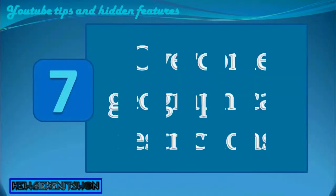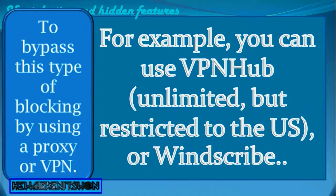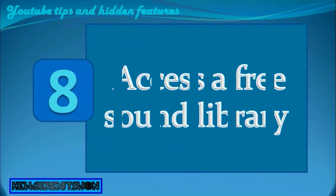7. Overcome Geographical Restrictions. Some videos may be geographically blocked. It is possible to bypass this type of blocking by using a proxy or VPN from your computer, but also from your smartphone. For example, you can use VPN Hub Unlimited, but restricted to the US, or Windscribe, limited to 10GB of data per month, with several countries available on iPhone and Android, to simulate your presence in another country by changing your IP address. Once you have enabled VPN on your device, simply reload the page to play the video.